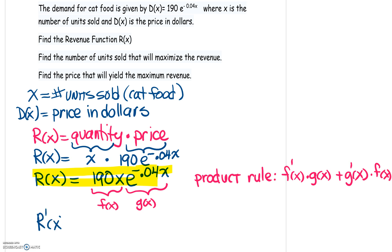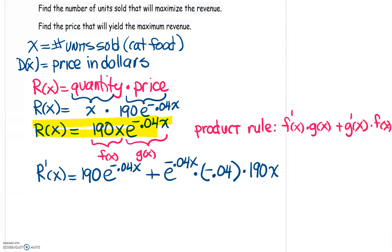So for our function, the derivative of the revenue is going to be the derivative of F of X. So the derivative of 190 X is just 190 multiplied by G of X, which is E to the negative 0.04 X, plus the derivative of G of X. So the derivative of E is just the same function E to the negative 0.04 X. However, don't forget the chain rule multiplied by the derivative of the inside. So times by negative 0.04 and then times that by F of X, which is 190 X.